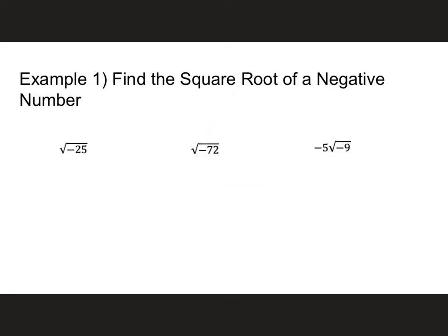Let's take a look at how we can simplify some problems that involve a negative underneath the radical. The way you handle that is you split it up — just like we do when simplifying a radical. We separate out the negative 1, the square root of negative 1. So we rewrite the square root of negative 25 as the square root of negative 1 times the square root of 25. The square root of 25 is 5, and the square root of negative 1 is i.